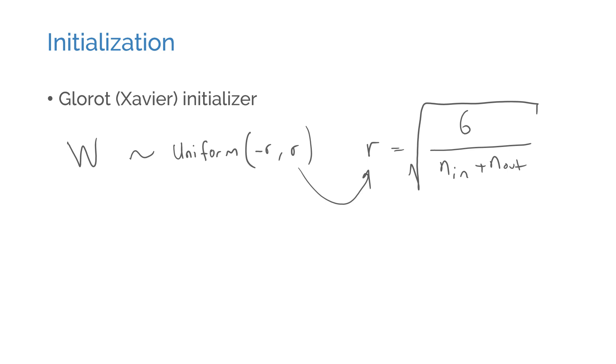The scale of the initial values matters, because if they are picked from a very narrow range of small numbers, then the units might not be different enough to learn different features. If the scale is too big, then the gradients might grow exponentially as the weights get multiplied from one layer to another. This problem is called exploding gradients, and is more prevalent in recurrent neural networks than the types of networks that we have discussed so far.